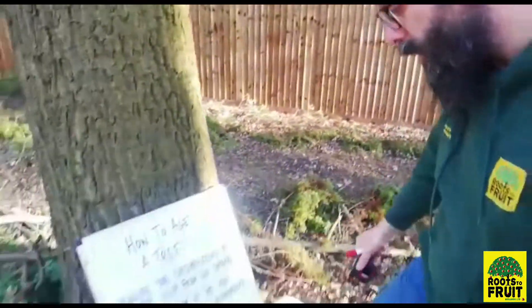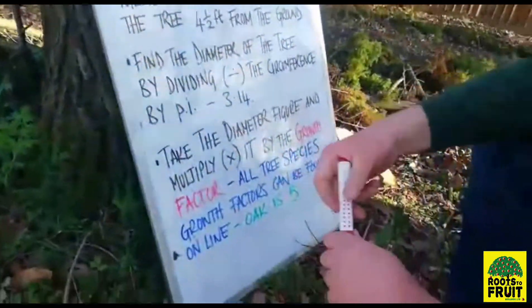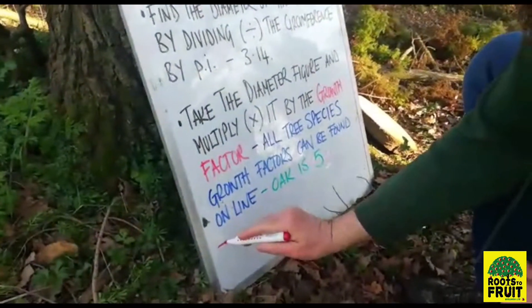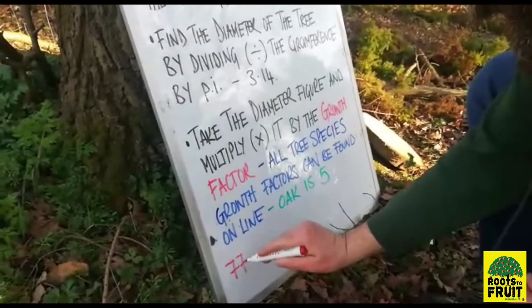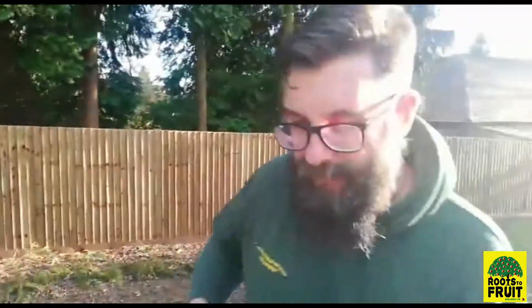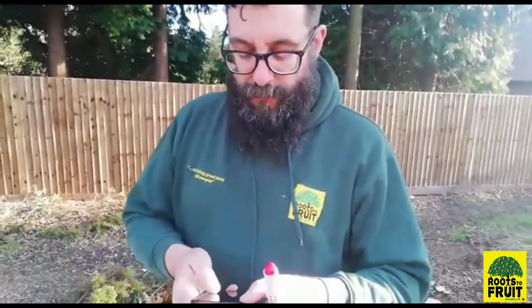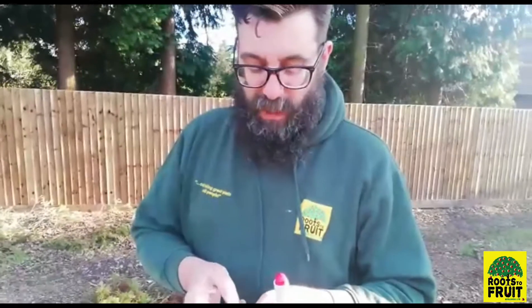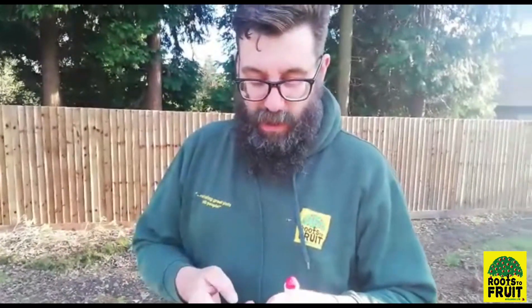So I'm going to write that down on the whiteboard: the circumference is 77. The next step is to take that circumference and from it work out the diameter of the tree, and the way we do that is by taking that 77 and dividing it by pi.